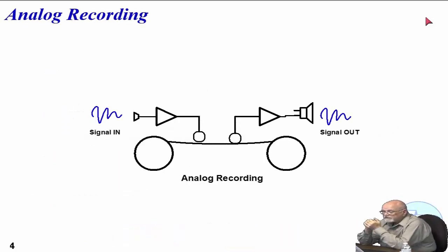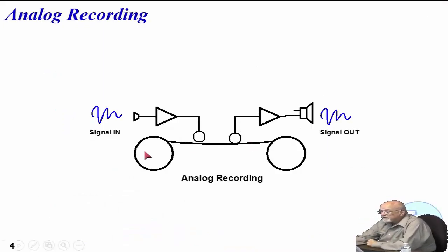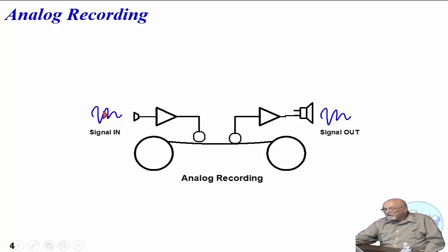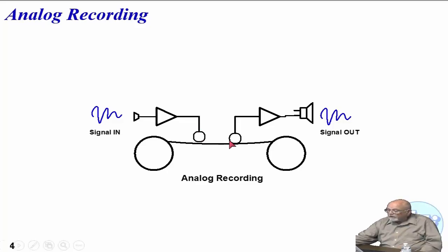Now, just to show you an illustration of what we call an analog recording — this is supposed to represent tape. This is a microphone that's looking at some sort of information. It could be speech, it could be music, it could be anything of that nature. There's basically an amplifier which takes this and boosts it up, and then it'll have recording heads which record the information on tape. The following here is essentially a receiver head — you'll pick up the information, amplify it, put it in the speaker, and get the signal out.